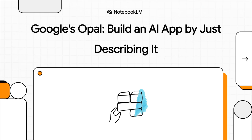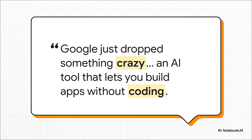Today, we're digging into something new from Google called Opal, and it comes with this massive promise. What if you could build an AI app, a real one, just by describing it in plain English? Google just dropped something crazy — an AI tool that lets you build apps without coding. That's a huge claim, so let's break down exactly what that means and if it lives up to the hype.